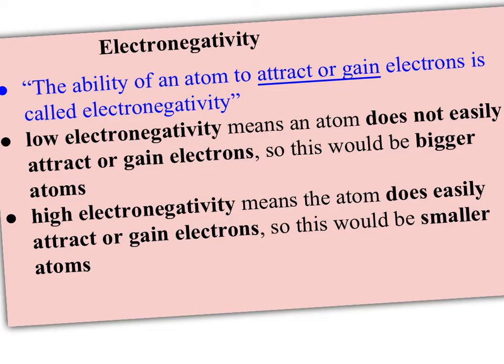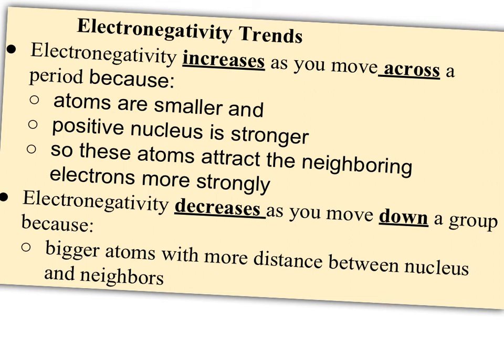What's electronegativity? Electronegativity is basically the opposite of ionization energy — it's the ability of an atom to attract or gain electrons. Low electronegativity means an atom does not easily attract or gain electrons; these are your bigger atoms, where the nucleus is buried far away from neighboring electrons. High electronegativity means the atom easily gains or attracts electrons because its nucleus is close to those neighboring electrons — these are your smaller atoms. So electronegativity increases across a period, just like ionization energy.